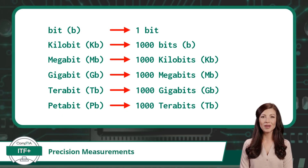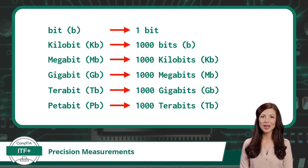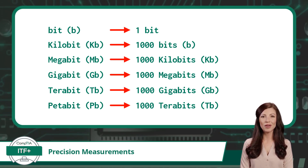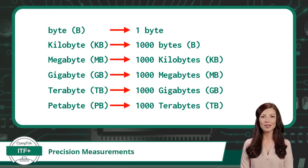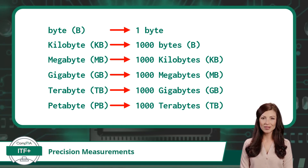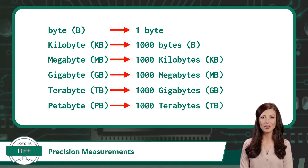Every measurement unit we have learned thus far has been based on factors of 1000. For example, with bits (lowercase b), there are 1000 bits in a kilobit, and 1000 kilobits in a megabit, and so on. The same holds true for bytes (uppercase B) as well — there are 1000 bytes in a kilobyte, 1000 kilobytes in a megabyte, etc. This makes working with larger quantities a little easier, but you should know that these numbers do not represent the exact number of bits or bytes. These are rounded values.